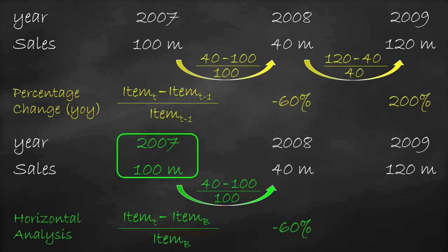The percentage change in 2009 is $120 million minus $100 million, all divided by $100 million, which is equal to 20%. This means that the company has higher sales of 20% in 2009 compared to the base year of 2007. This percentage change makes sense, as it is reasonable that sales grow by 20% without acquiring another firm or expanding, for example.